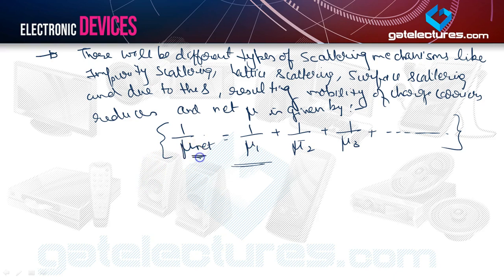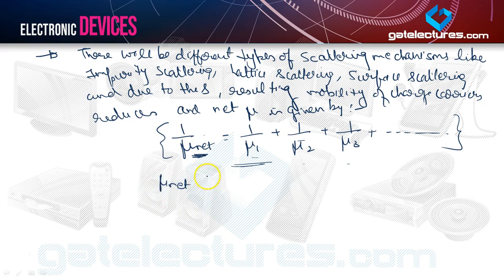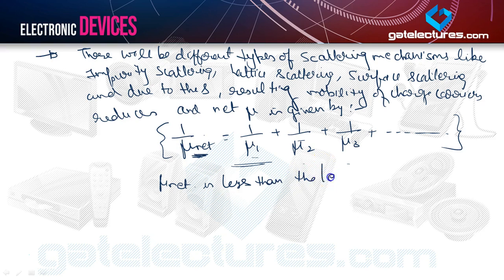So far we have seen the variation in mobility of charge carriers with temperature as well as doping concentration. We have seen what is the effect on mobility due to doping and various scattering phenomena. Now let's have a keen look at the variation in mobility with electric field intensity — this portion is important.